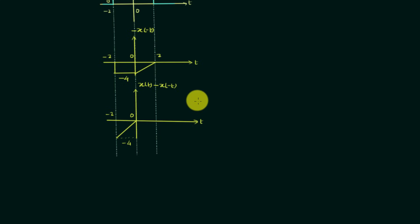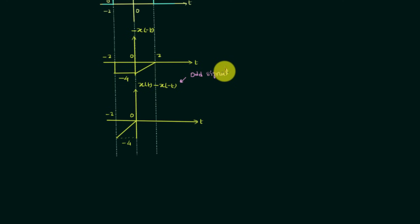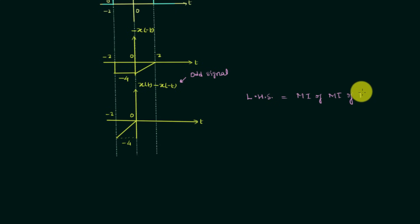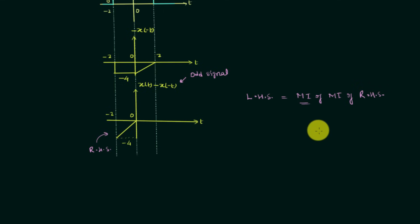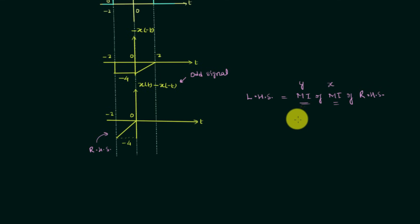This is the numerator of the odd component, and dividing by 2 will also make X(t) minus X(-t) an odd signal. We already know the property of the odd signal: the left-hand side is the mirror image of the right-hand side. To get the left side from the right side, perform a mirror image about the Y axis first, then about the X axis — or alternatively, first about the X axis then about the Y axis.